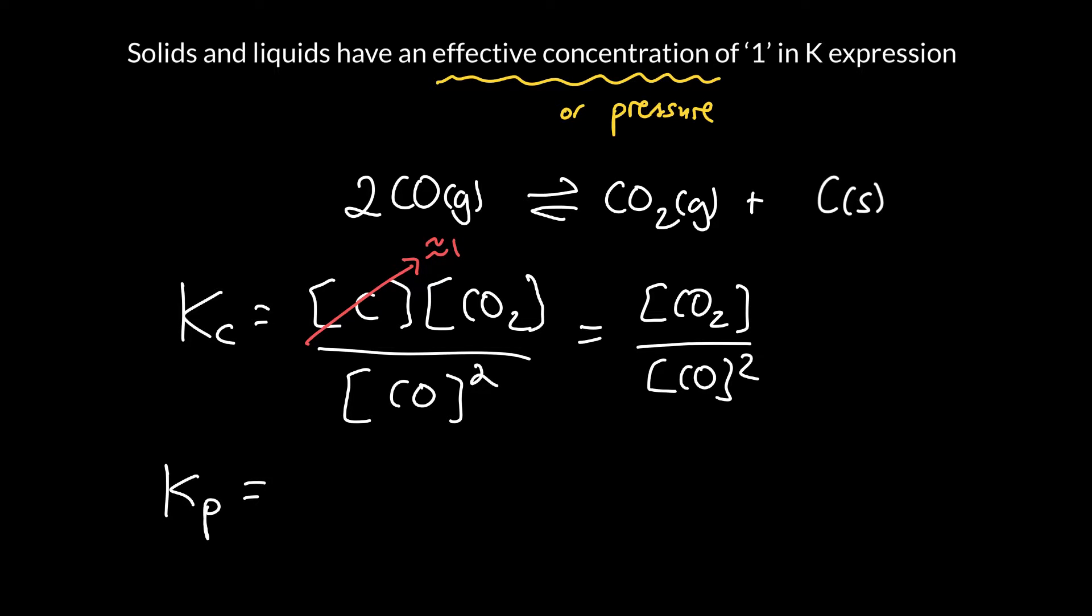If we wrote the same thing for Kp, it would be the partial pressure of carbon times the partial pressure of carbon dioxide over the partial pressure of carbon monoxide squared. We give this an effective pressure of 1, so we simplify that to be the partial pressure of CO2 over the partial pressure of CO squared.